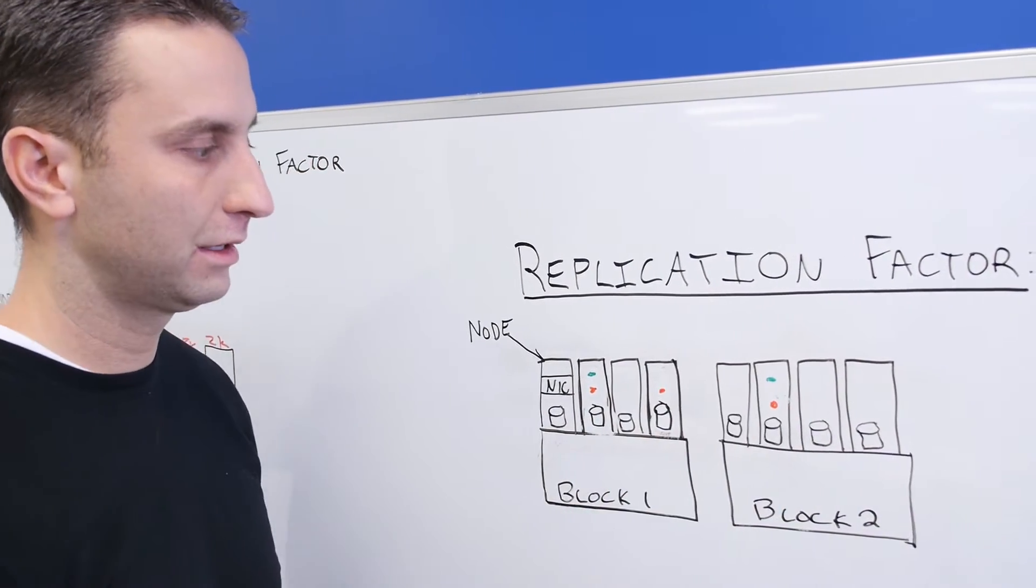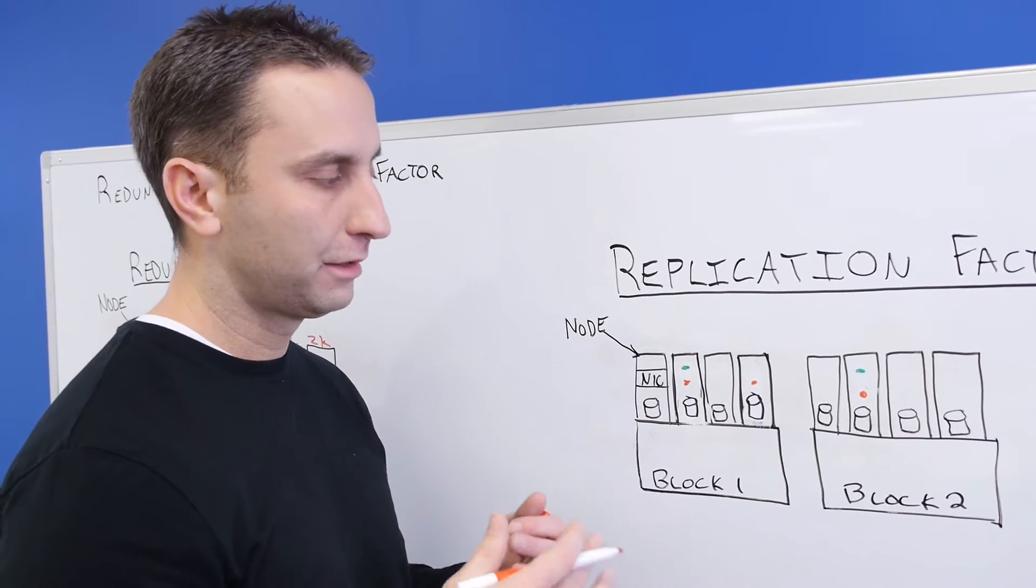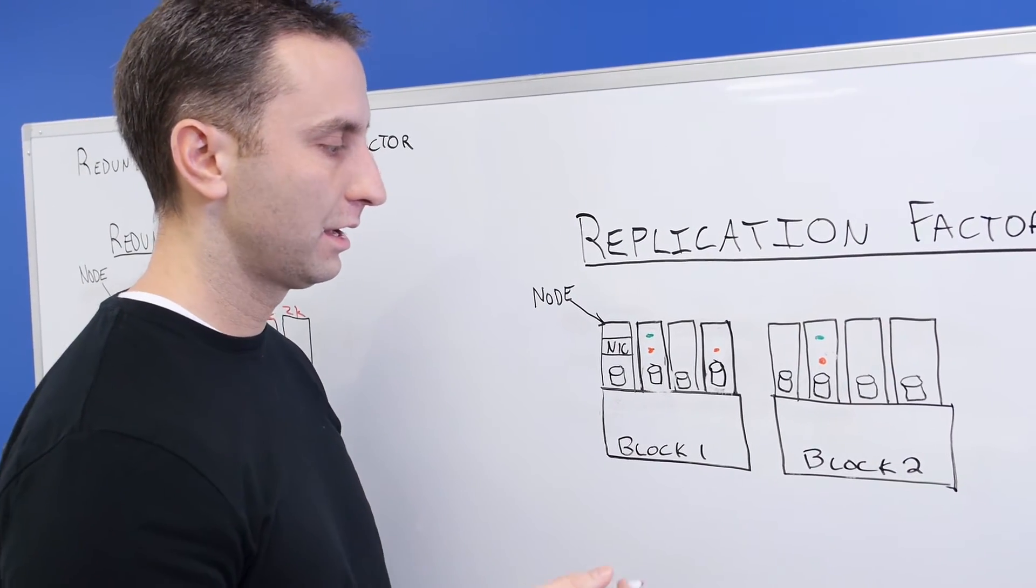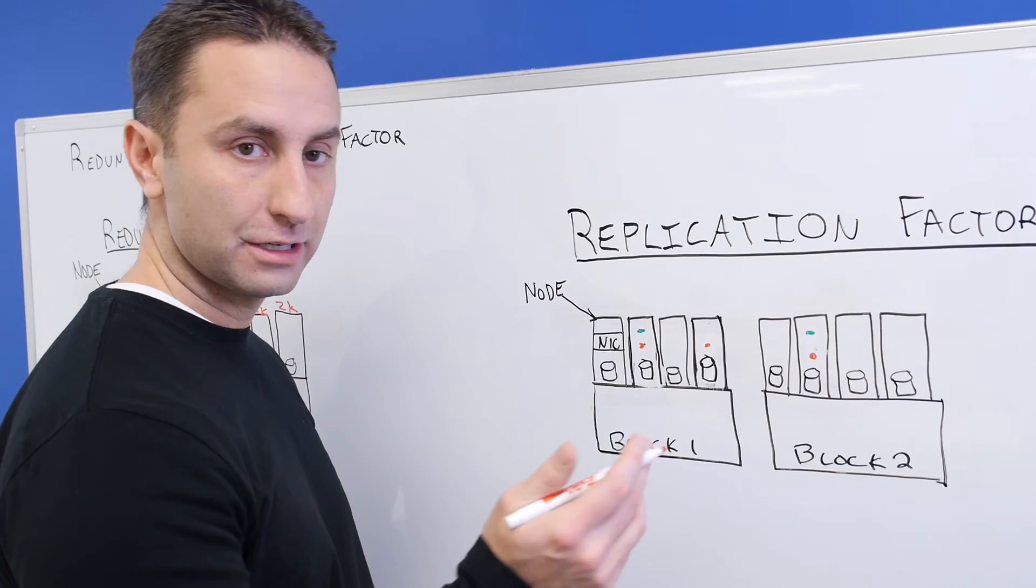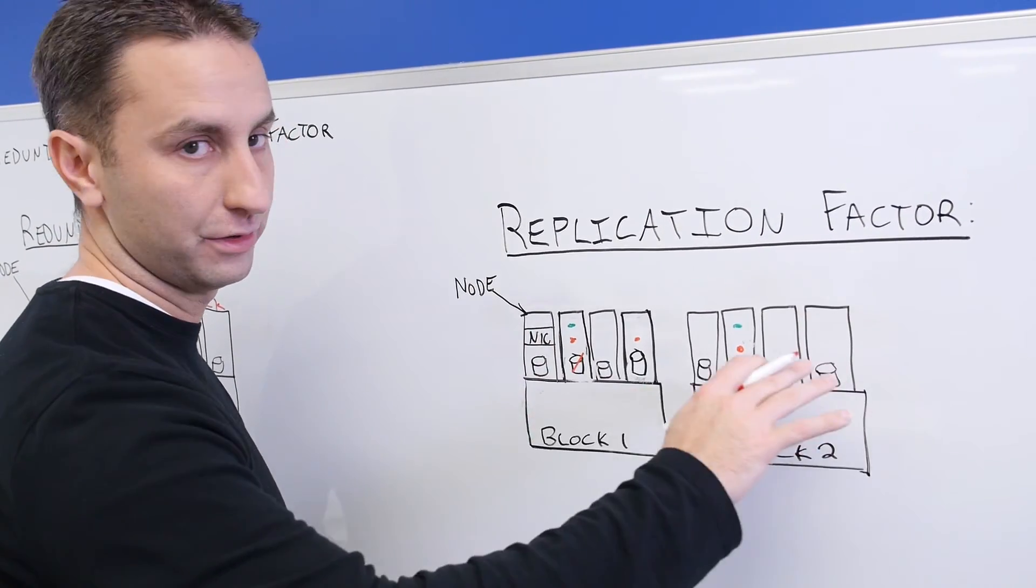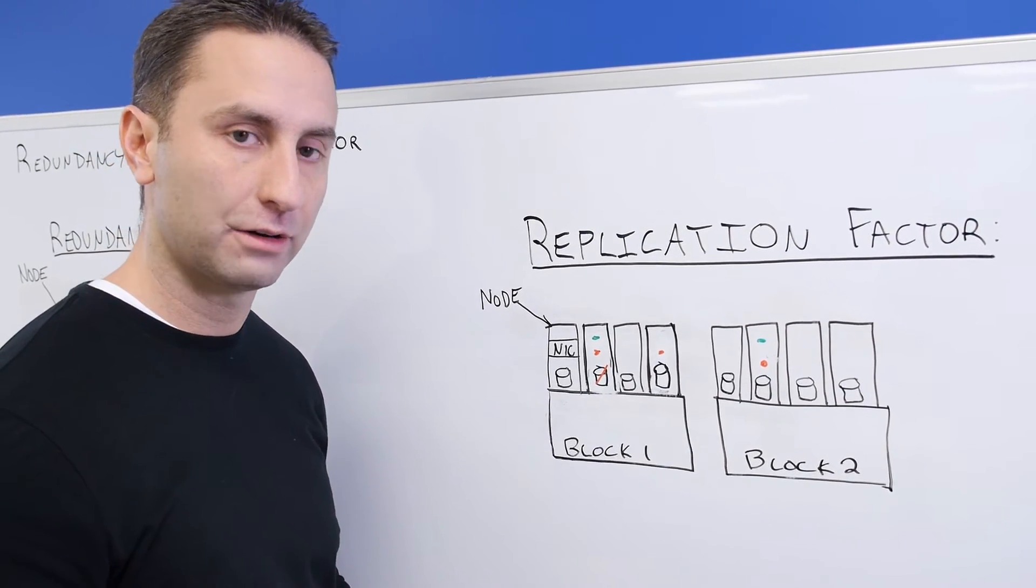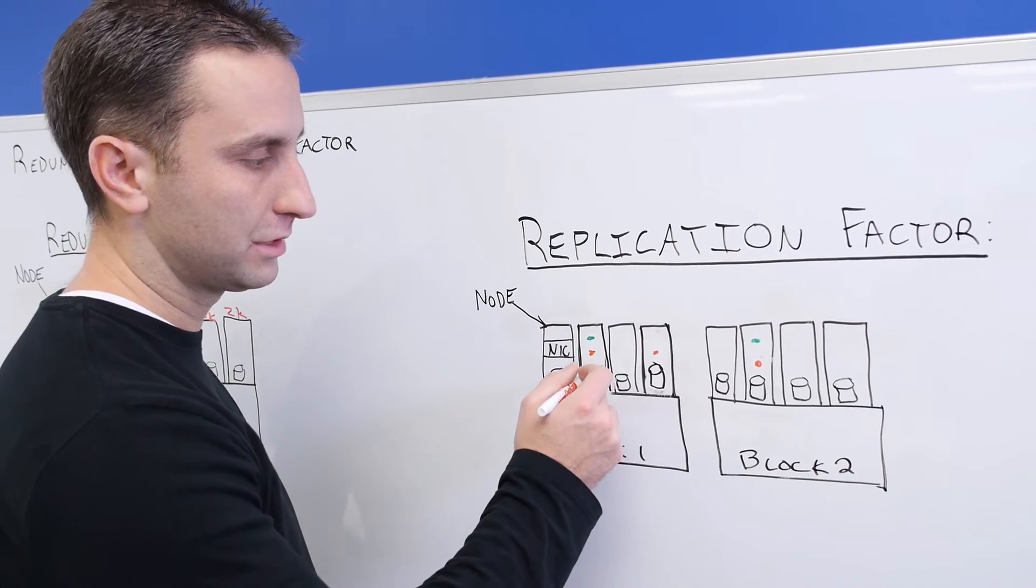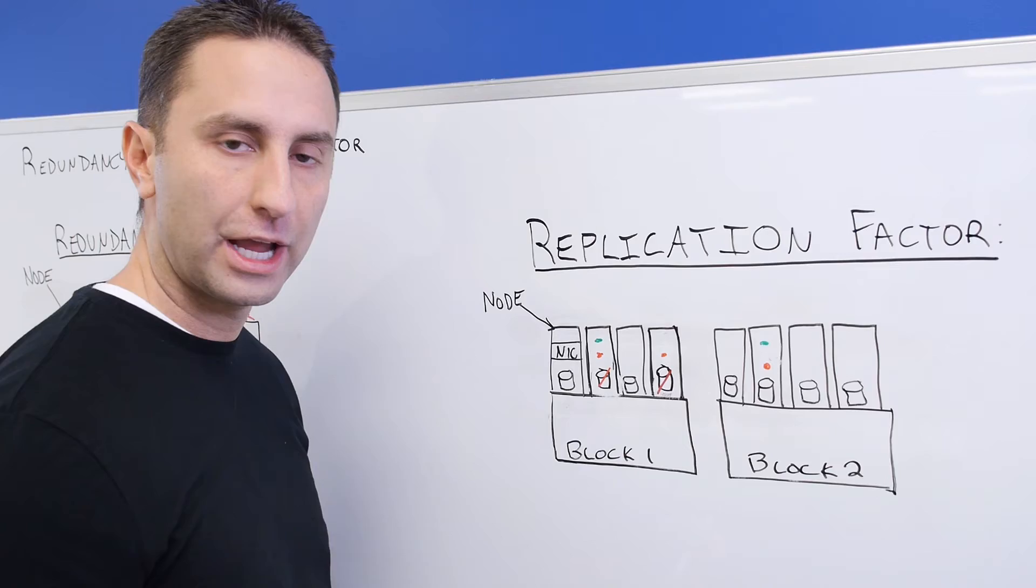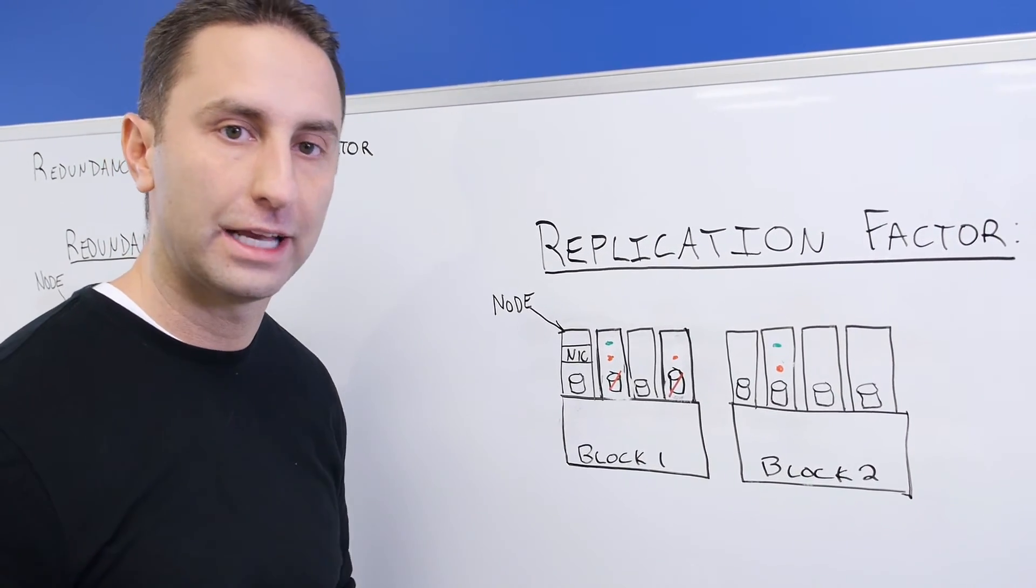So what does all this mean? Going back to what we covered with redundancy factor, it directly defines the number of components that you can lose on your system for that container. So if you had the replication factor two container, you could only tolerate losing this disk and not another disk in the system, because you don't know where that second piece of data is going to exist. But if you have a replication factor three container, you can not only lose this disk but you could lose this other disk, assuming that piece of data is there, and you know that the third replication of that data is going to be somewhere else in the cluster, so you're not at risk for any data loss.